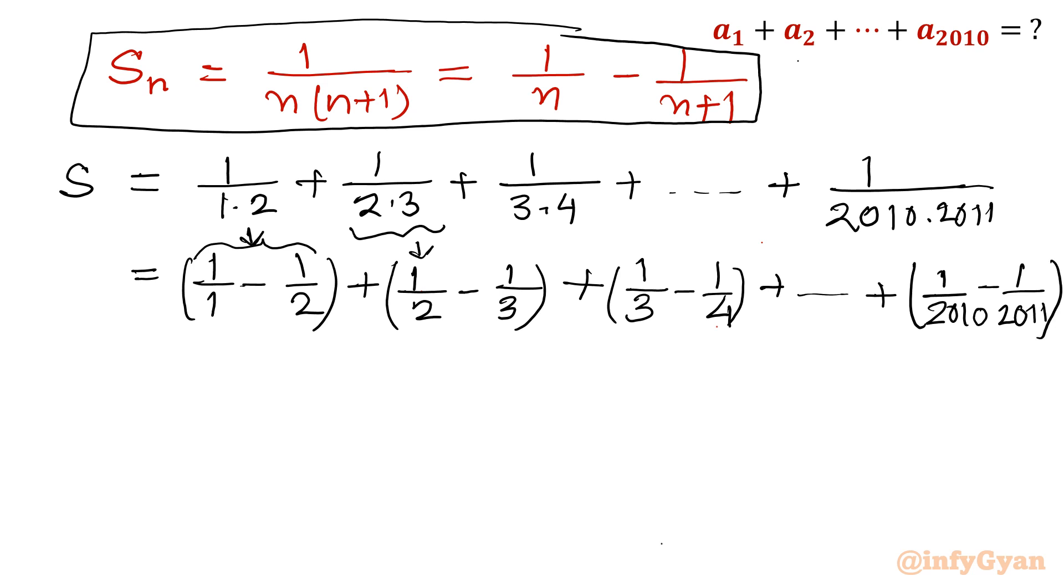If you will check only the terms, then it will become -1/2 and +1/2, -1/3 and +1/3, -1/4 and +1/4. Similarly, 1/2010, and before that it would be 1/2010 with negative sign. So everything will be cancelled out except first and last term. So it will be left with only 1/1, that is 1, minus 1/2011.